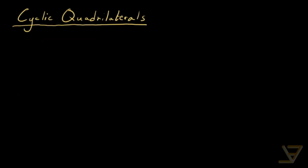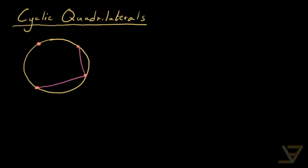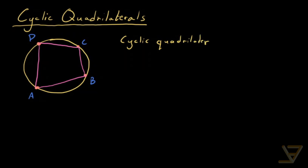Hi, everyone. Let's talk about cyclic quadrilaterals. A cyclic quadrilateral is something like the following: we have a circle and we pick four points on it — one, two, three, and four — then connect consecutive vertices to get a quadrilateral. The resulting quadrilateral, let's say we call it ABCD, is what we call a cyclic quadrilateral. A cyclic quadrilateral is a quadrilateral that has all four vertices on a circle.